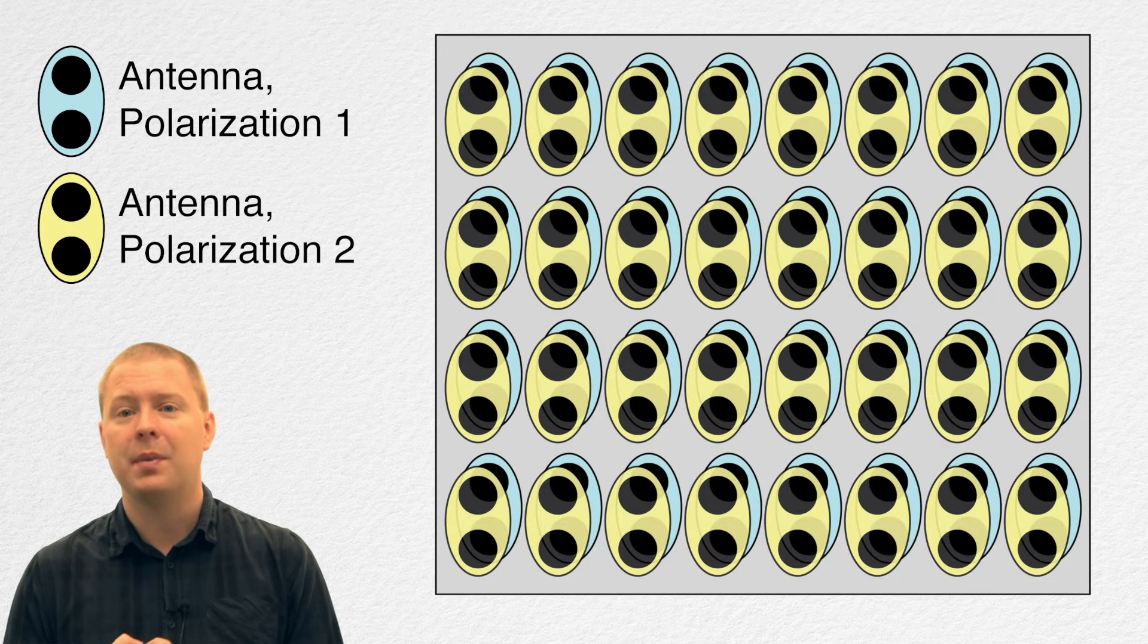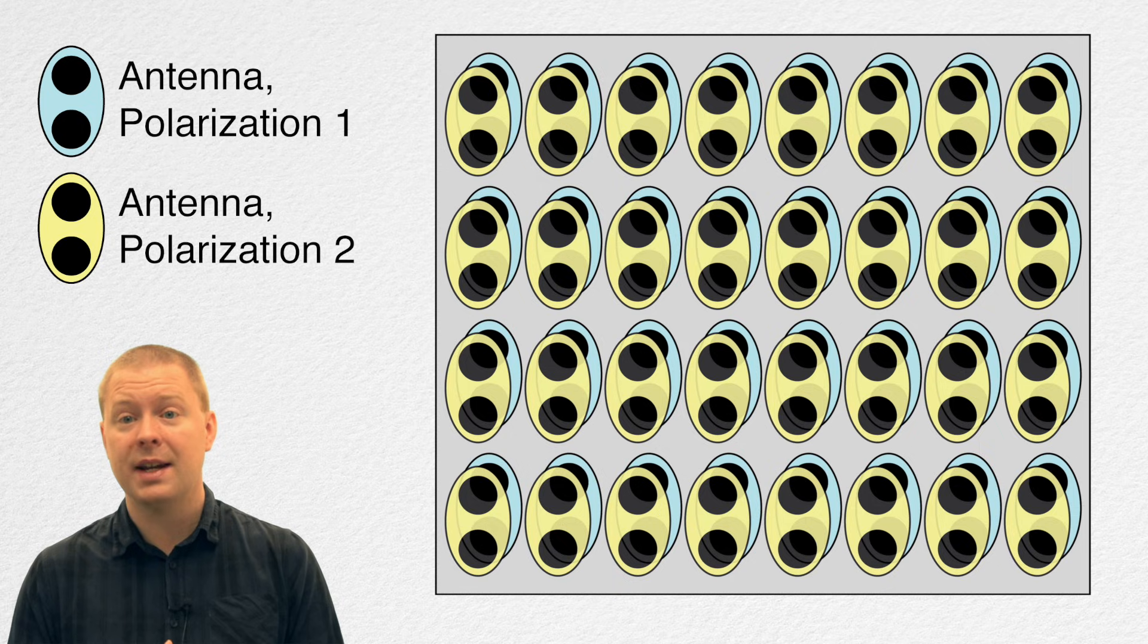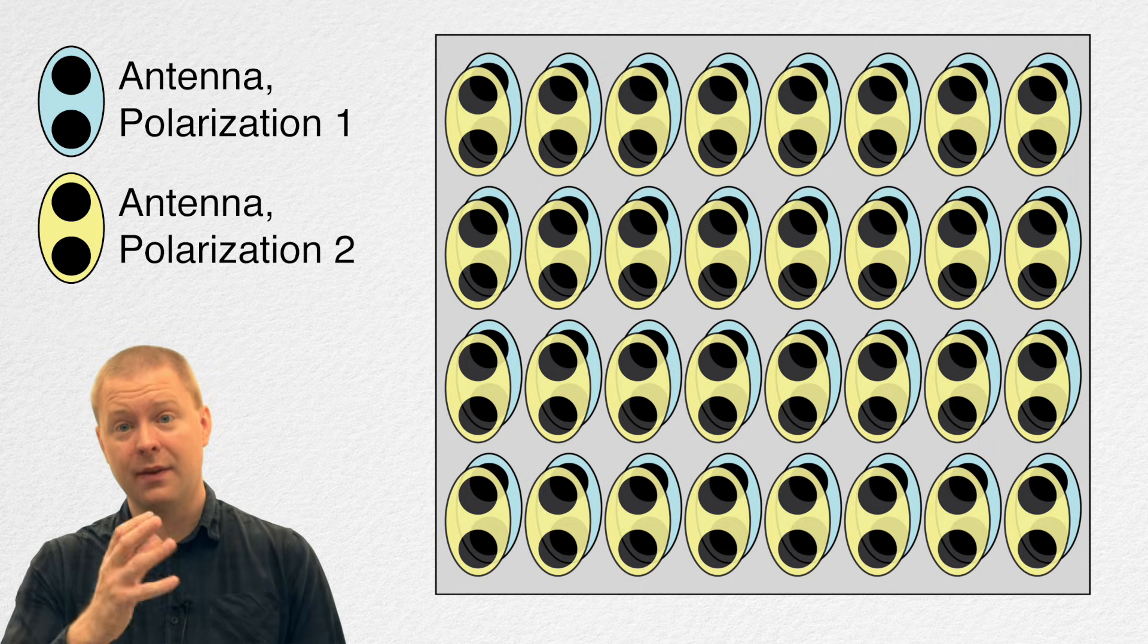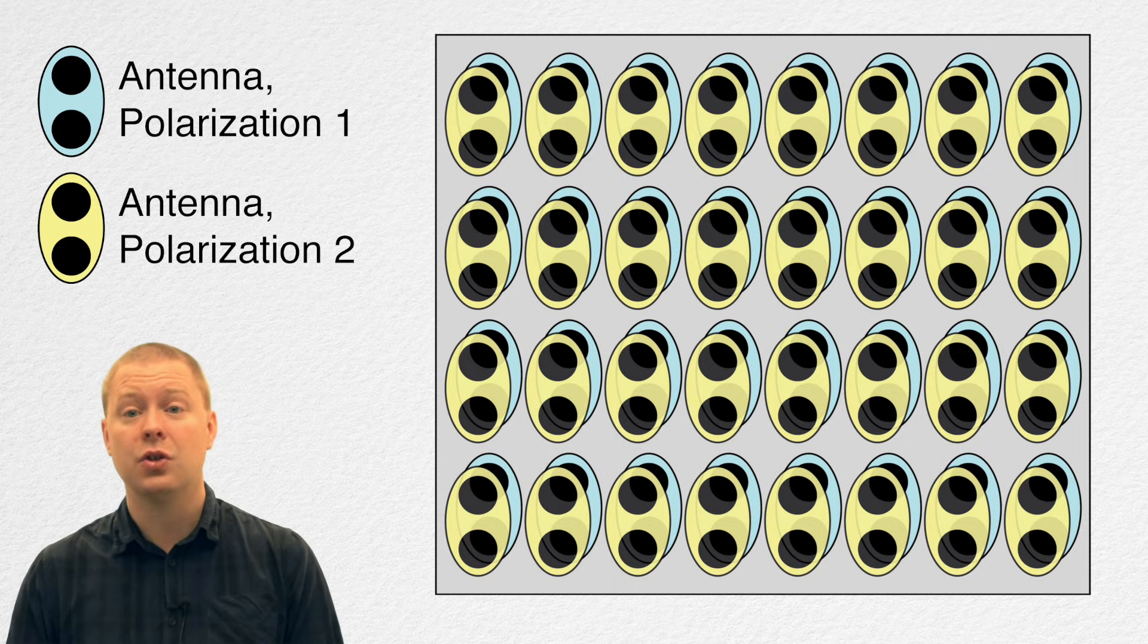For that reason, the base station array contains 64 radiating elements of one polarization and 64 other radiating elements with the other polarization. Then the user device can be rotated in any way you like.